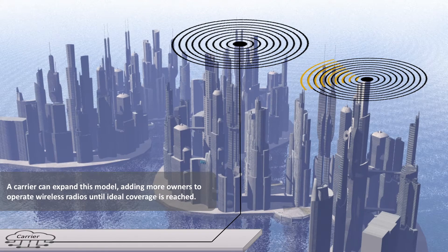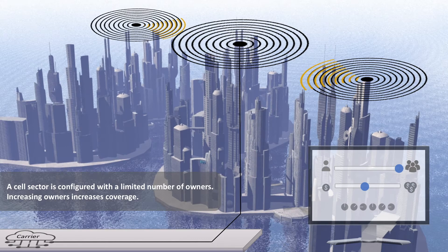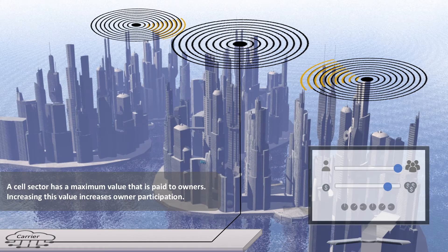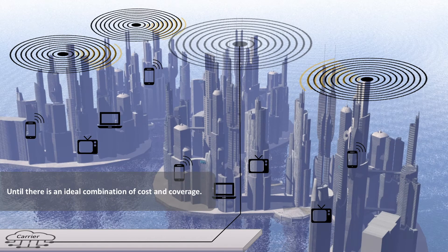A carrier can expand this model, adding more owners to operate wireless radios until ideal coverage is reached. A cell sector is configured with a limited number of owners, which are access points, so increasing owners increases coverage. A cell sector has a maximum value that is paid to owners, and increasing this value increases owner participation until there is an ideal combination of cost and coverage.